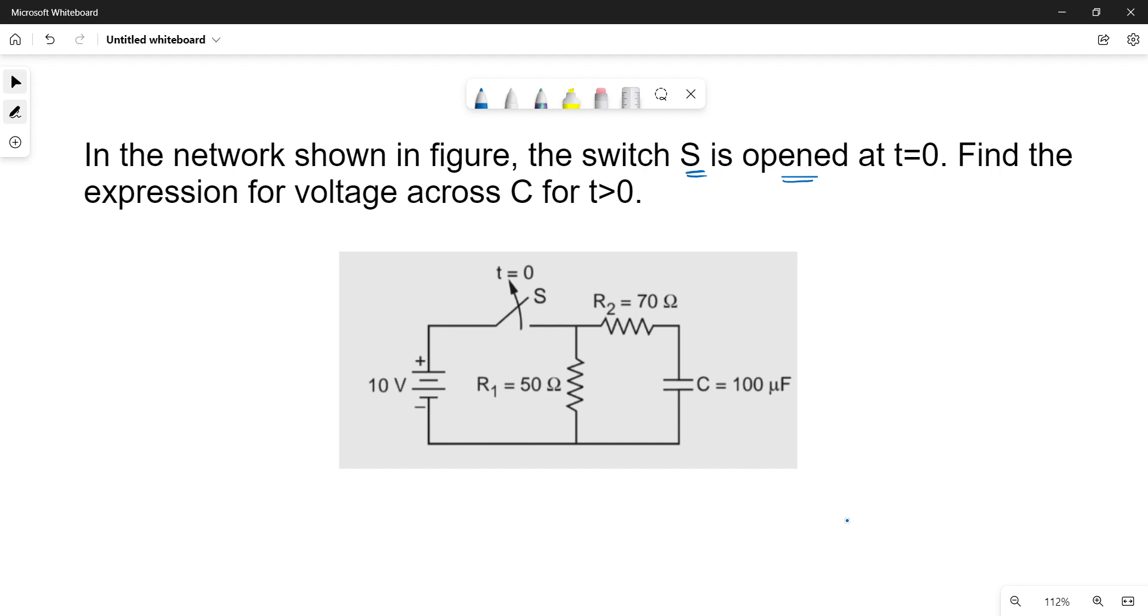You can see a problem in the network shown in the figure. The switch is opened at t equal to 0. We need to find the voltage across the capacitor when t is greater than 0.